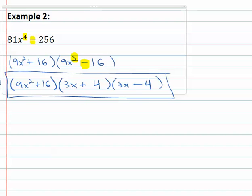Factoring a difference of fourth powers means we can use the difference of squares possibly twice.